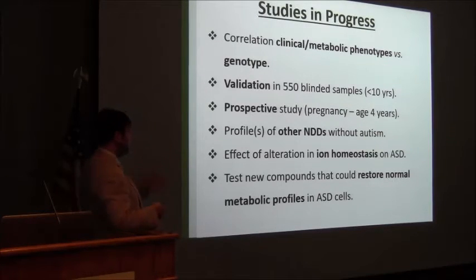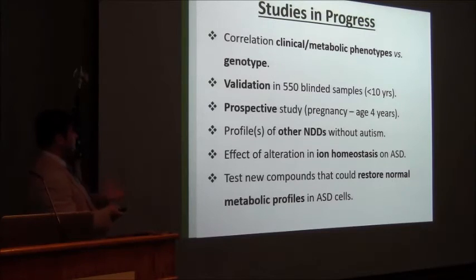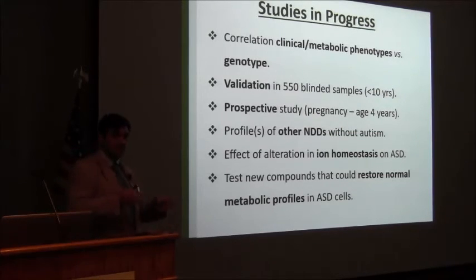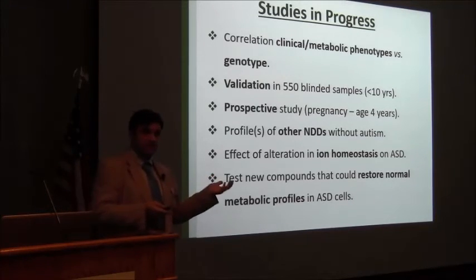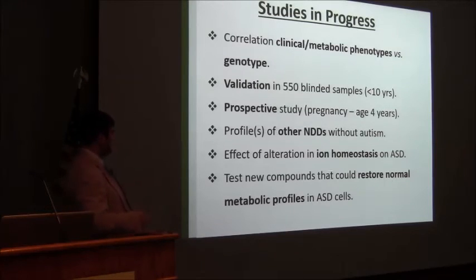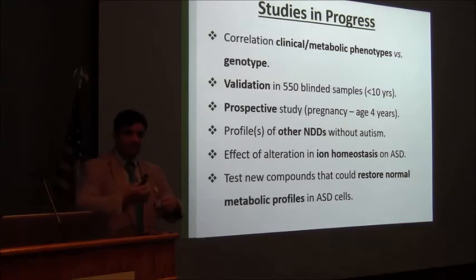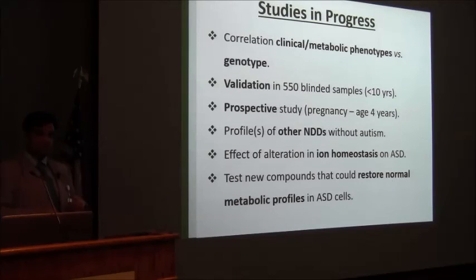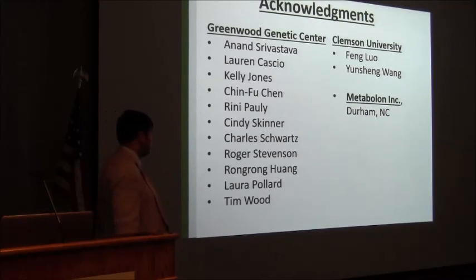These are the studies in progress. First, we would like to establish a correlation between the clinical, metabolic phenotypes and the genotype — we have been very active in genome sequencing studies. Then, further validation on 550 blind samples — approximately 300 ASD, 150 controls, and 100 with other neurodevelopmental disorders — with respective prospective studies. When we expanded our platform, we noticed that ions are showing some significant differences, so investigating ion homeostasis in ASD would be another goal. And finally, testing compounds for treatment. I would like to thank everyone for their help. Thank you very much.